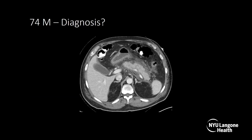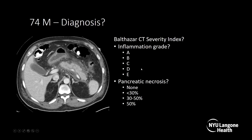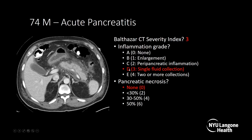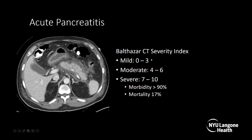This is a 74-year-old male. On this axial abdominal pelvic CT with IV and positive oral contrast, you can see around the pancreas there's peripancreatic fat stranding, but also there's a fluid collection. The portion of the pancreas shown enhances completely. So the Balthasar CT severity index would be grade D — one fluid collection and no necrosis — giving a score of 3, which is mild acute pancreatitis. Severe acute pancreatitis is associated with morbidity over 90% and a mortality of 17%.